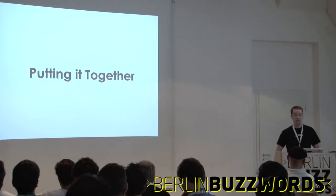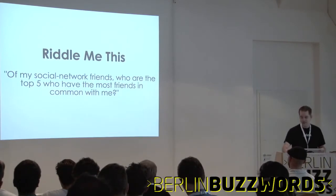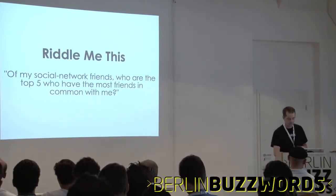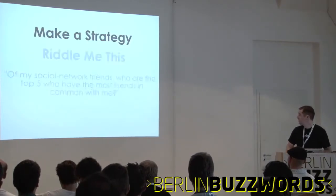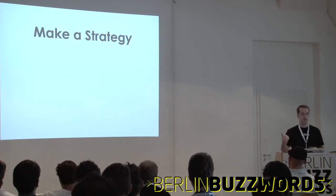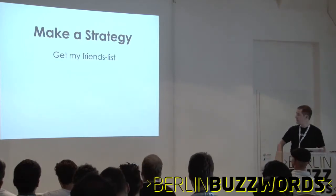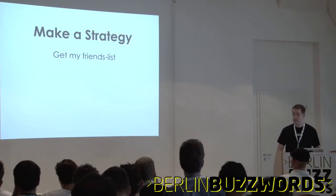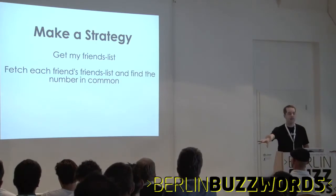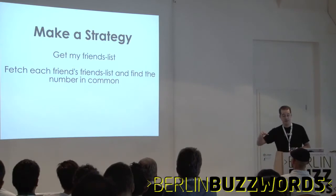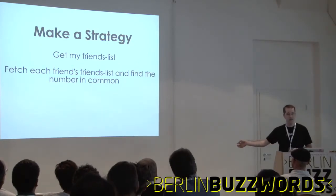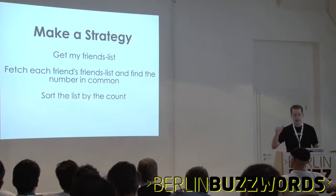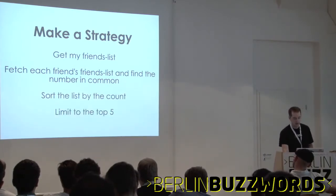Let's look at a practical example. Of my social network friends, who are the top five who have the most friends in common with me? We need a strategy since it's not SQL. First, fetch my friends list stored as a single object. Then fan out and collect all of my friends' friends lists. Pass along my list when fetching theirs to compare. Find the number in common, then sort by count and limit to the top five. This translates to two maps and two reduces.